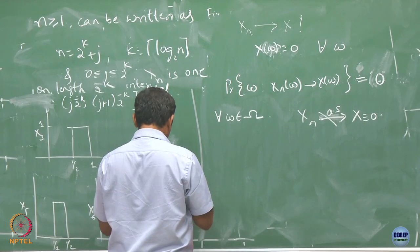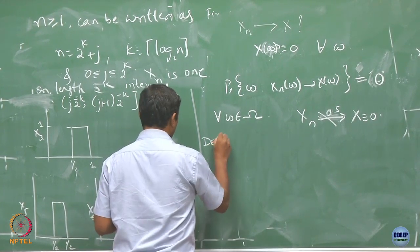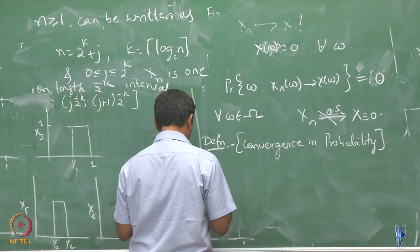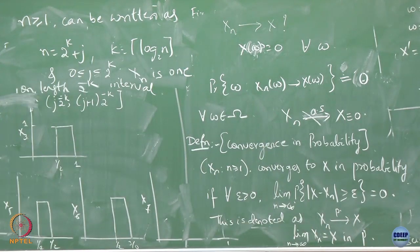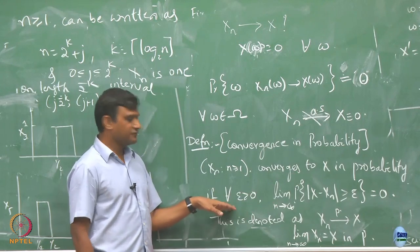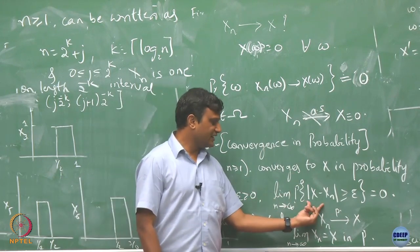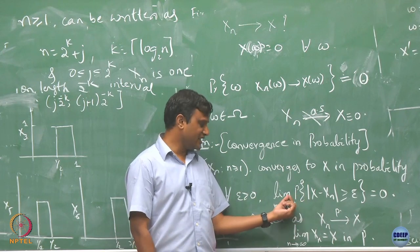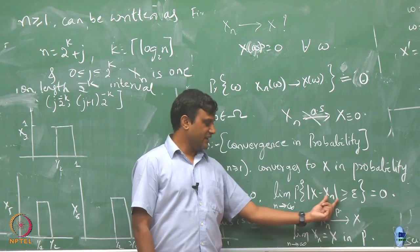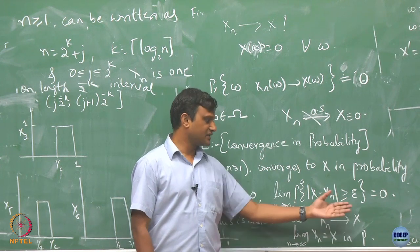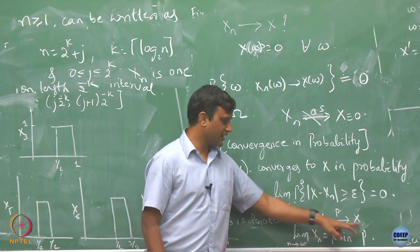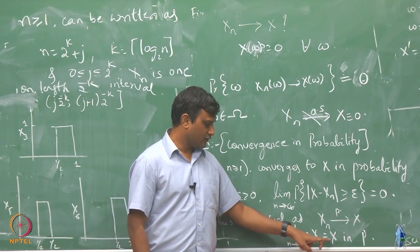For that we have another notion of convergence called convergence in probability. We are going to say that a sequence of random variables converges to x in probability if for any ε > 0, if you look at this sequence of probabilities — the probability of the event |x_n − x| ≥ ε — and this limit is now outside, if this sequence converges to 0 then we call this convergence in probability, denoted x_n →^P x, or limit as n → ∞ of x_n = x in P.